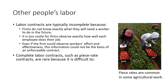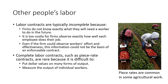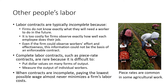In some cases we see complete labor contracts, such as piece-rate contracts, but they're rare and often difficult because it's tough to put a dollar value on many forms of output. Piece rates are sometimes common in agriculture — you're paid based on weight, so whatever weight is picked at the end of the hours worked, you'll be paid accordingly. It's difficult to measure the output of individual workers. When contracts are incomplete, paying the lowest possible wage almost never minimizes a firm's labor costs — something we'll dive deeper into when we cover the labor discipline model.